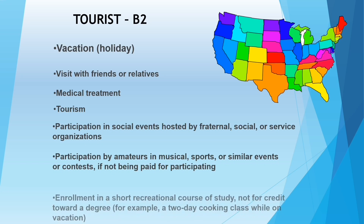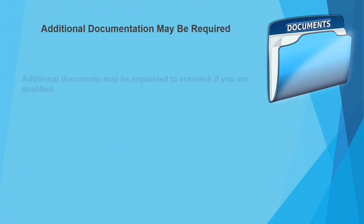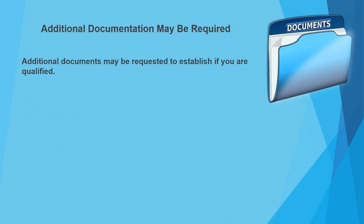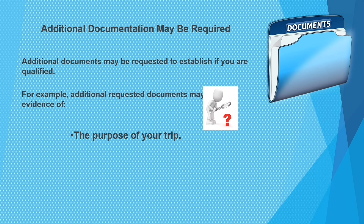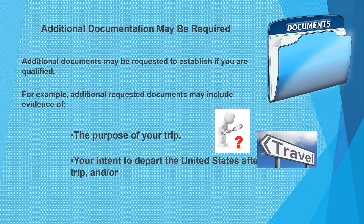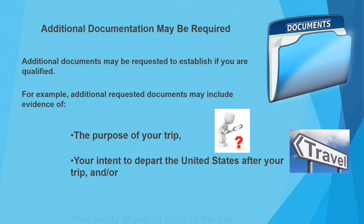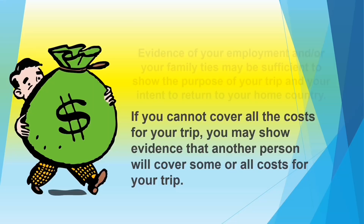Enrollment in a short-term educational course of study not for credit is also covered. Additional evidence will be needed to establish the purpose of your trip. You must show: first, the purpose of your trip — whether attending a conference or visiting family or friends; second, your intent to depart the U.S. after your trip; or your ability to pay all costs of the trip.